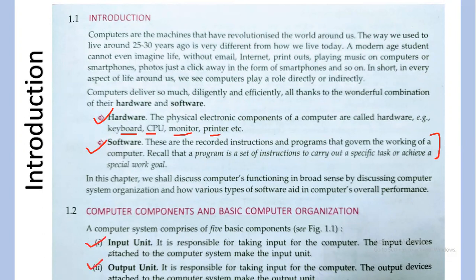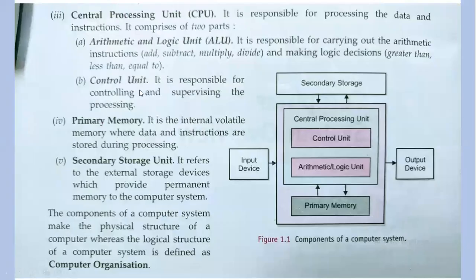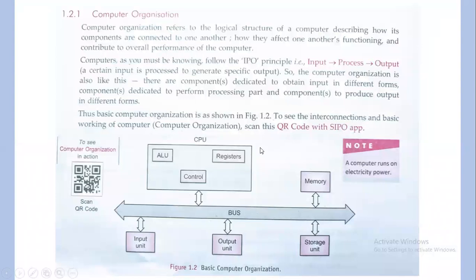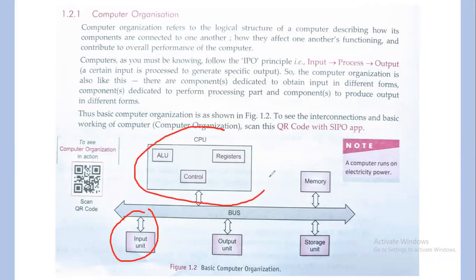The components of a basic computer system organization are the input unit, output unit, CPU (central processing unit), primary memory, and secondary storage unit. This can be understood using the basic computer system organization diagram: the input unit feeds into the CPU, which uses memory, may use the storage unit to store information being processed, and finally produces the output.